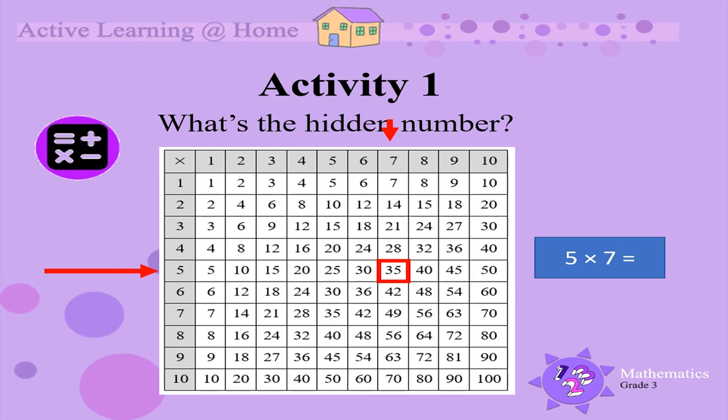We have found the hidden number. It is 35. Now you try this by yourself. Cover another number and then write the number sentence to find the answer.